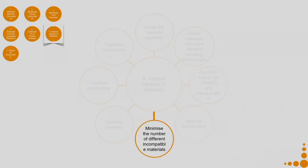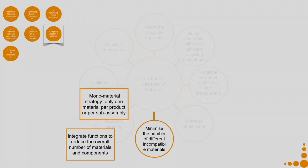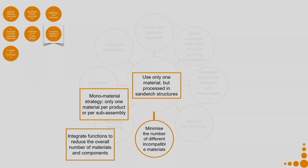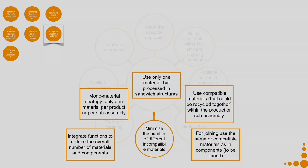Then minimize the number of different incompatible materials: integrate functions to reduce the overall number of materials and components. A monomaterial strategy — only one material per product or assembly — is a very good strategy, though not always possible. Use only one material but processed in a sandwiched structure that can give better structural integrity where required. Use compatible materials that could be recycled together within the product or subassembly. For joining, use the same or compatible materials as in the components to be joined.